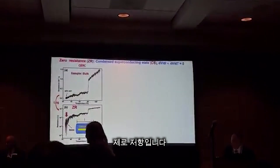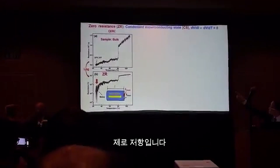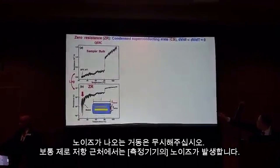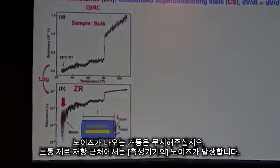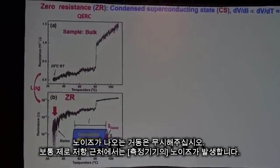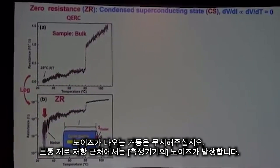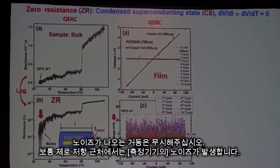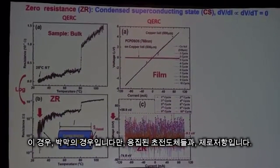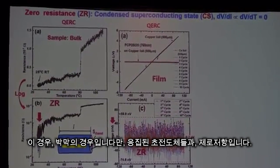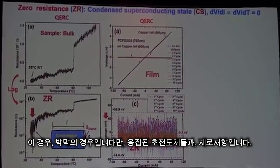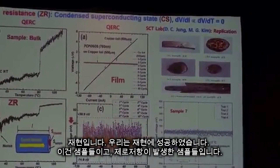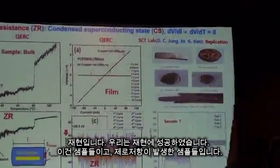This diagram shows the previous results. There is general resistance — Ohmic behavior — with some noise. Usually, when the general resistance becomes noisy, it becomes a concern. This is the thin film case. When conducting in the superconducting state, it generally behaves like that. We have succeeded in replications.